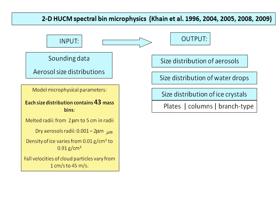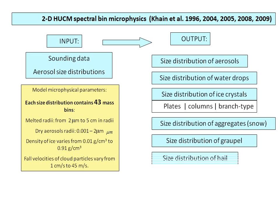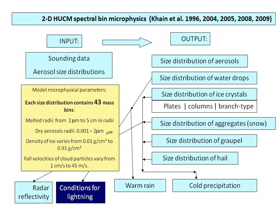We have three types of ice crystals — plates, columns, and branch-type dendrites — as well as size distributions of aggregates, snow, graupel, and hail. The model is based on the solution of the kinetic equation for all these size distributions.